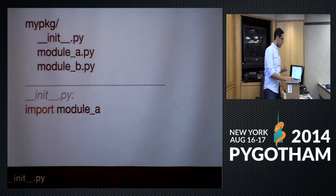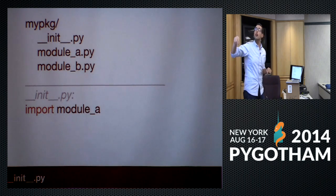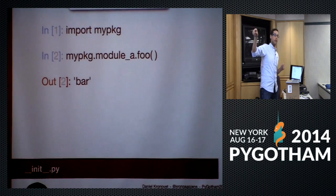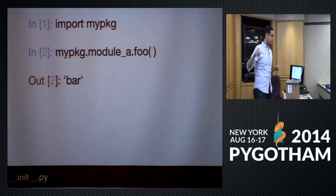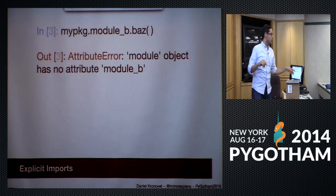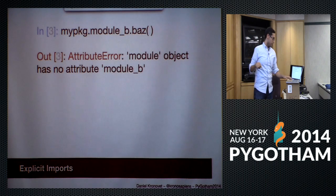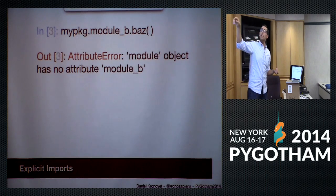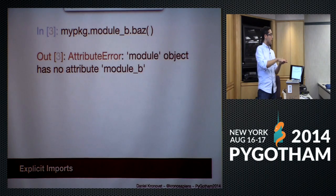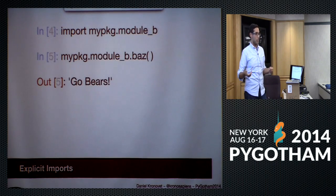You create a package by creating an `__init__` file, which tells Python to look inside for new modules. Inside init you can leave it blank or include imports. If you import module A within the init file, then importing the package and calling `package.module_a.foo()` will work. However, doing the same for a second module not imported by init does not work, because importing a package does not automatically import all modules defined in it unless they're in the init file — this is a Python efficiency thing.